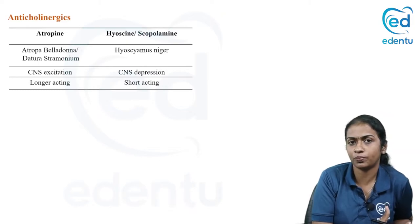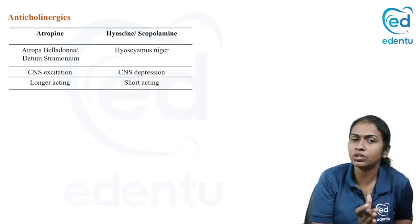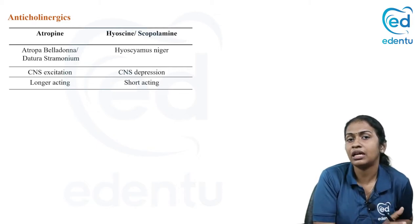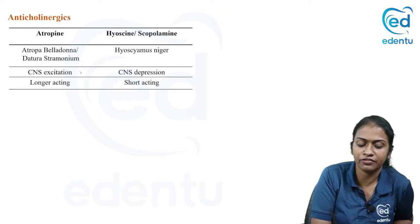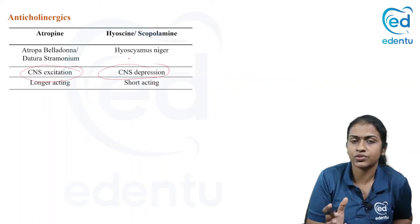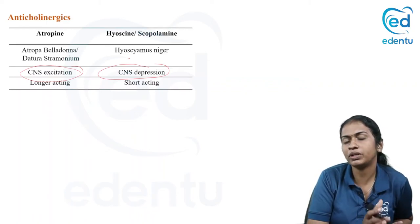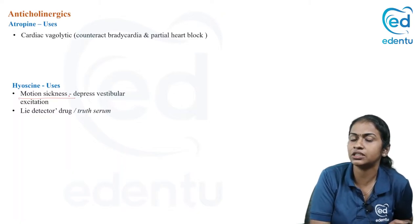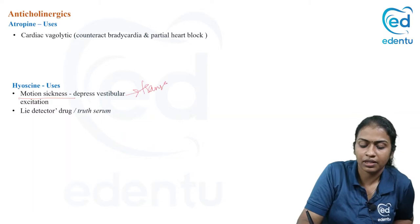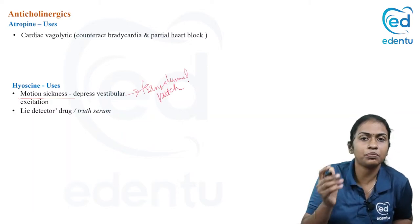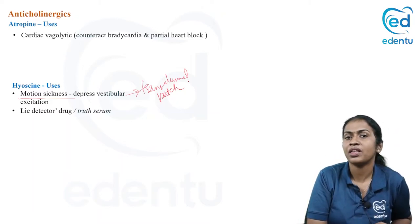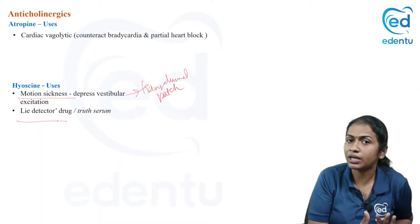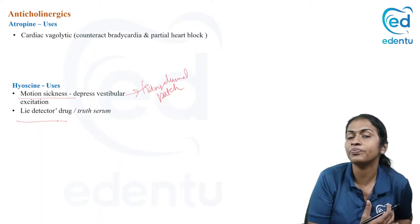Now for the difference between atropine and hyoscine — both are natural agents. Atropine is derived from Atropa belladonna and hyoscine from Hyoscyamus niger. The main difference is that atropine is a CNS stimulant while hyoscine is a CNS depressant. Atropine is longer acting and hyoscine is shorter acting. Hyoscine is mainly used for motion sickness because it depresses vestibular excitation. It can be used as a transdermal patch placed behind the pinna, lasting up to three days. It is also used as a lie detector drug or truth serum.